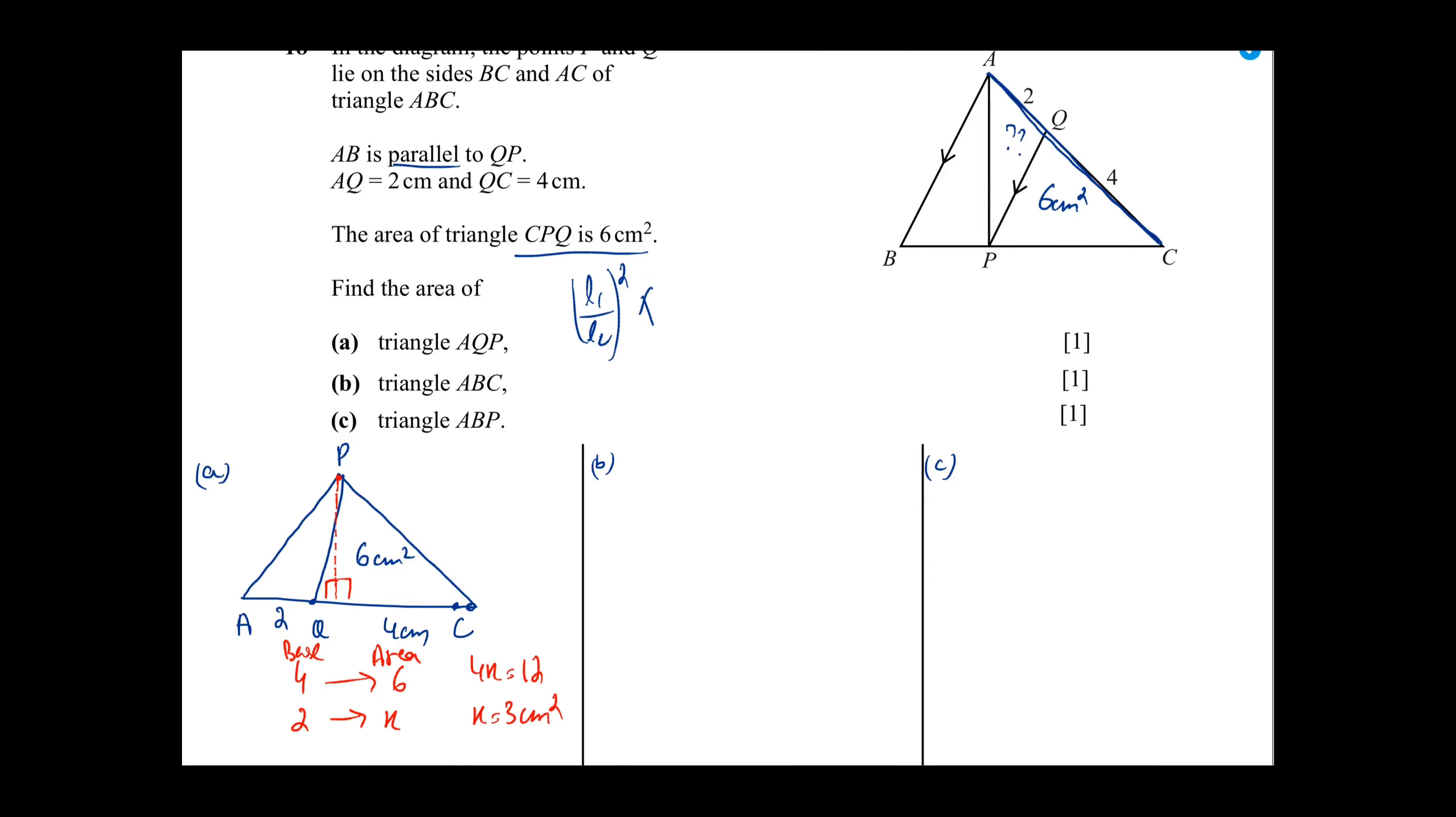We are looking at Part B which is asking for area of triangle ABC. Now, area of triangle ABC, how do we go? We need similar triangles to this. Why? Because these two lines are parallel, PQ and AB. Now, because these are parallel, it means that these corresponding angles are the same. On corresponding angles, it means that we are looking at two similar triangles.